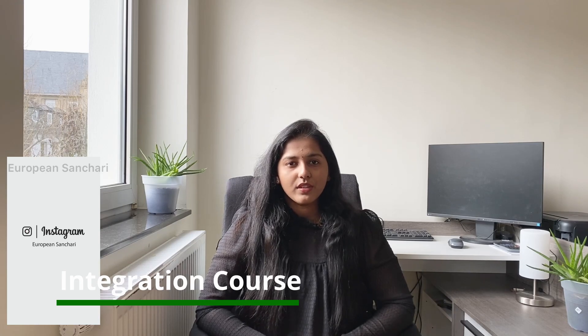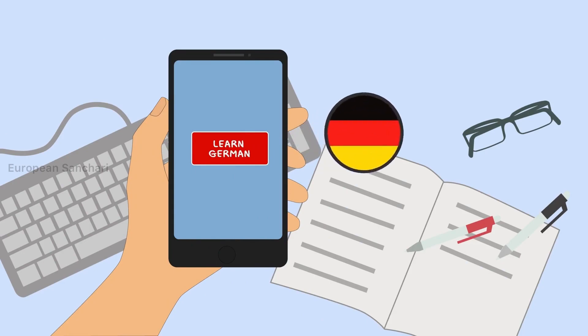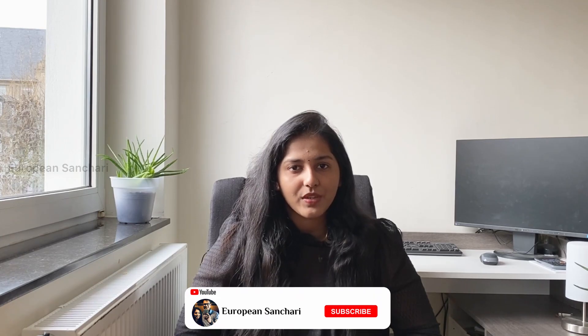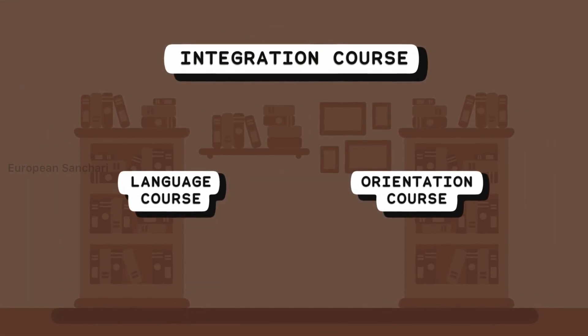What is the integration course? There are no basic German language skills required to start. The integration course covers language levels from A1 to B1, with around 700 hours of language instruction in total.